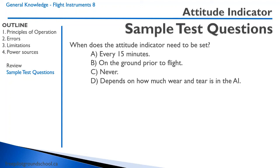C, never, or D, depends on how much wear and tear is in the Attitude Indicator. So this is kind of one of these most correct answers. The most correct answer is on the ground prior to flight. You turn the knob to make the wings line up with the horizon depending on where you're sitting.